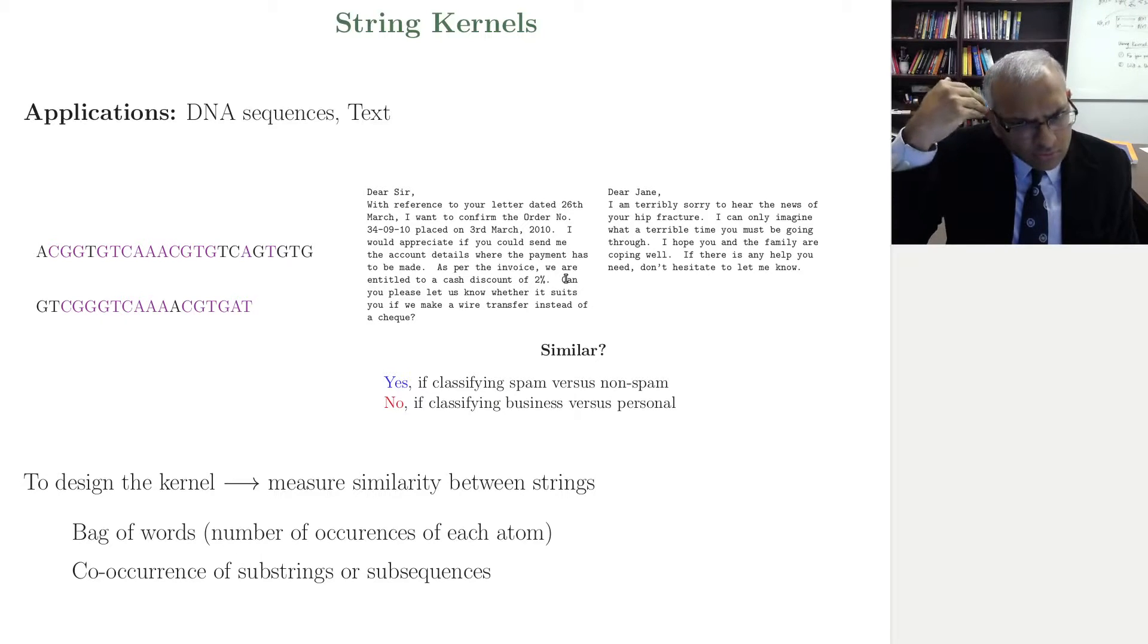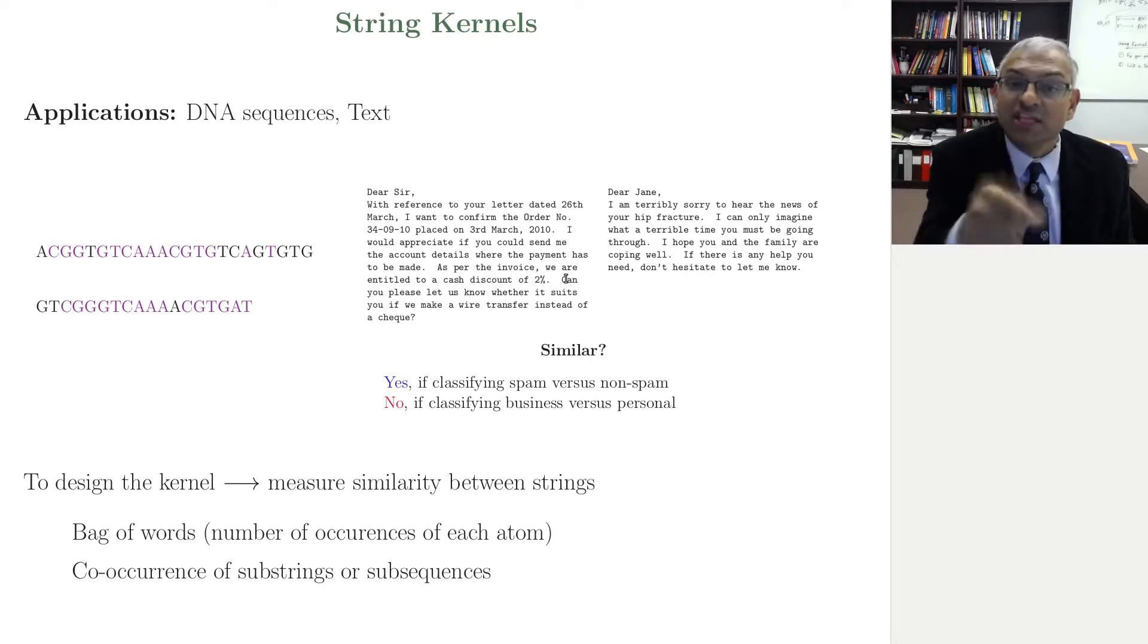Whatever your measure of similarity should take into account the nature of the problem. Because these two inputs are similar or not depending on the specific task. This just shows you that when you define a kernel, you must look at exactly what is the task you're solving, and the task you're solving can be different, even if the input space and the inputs are the same.